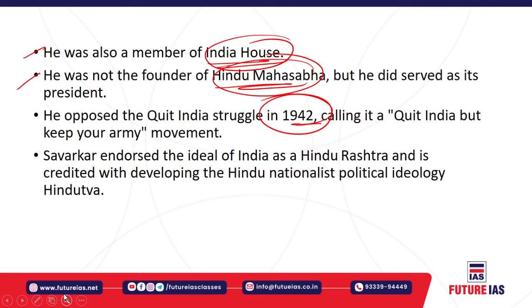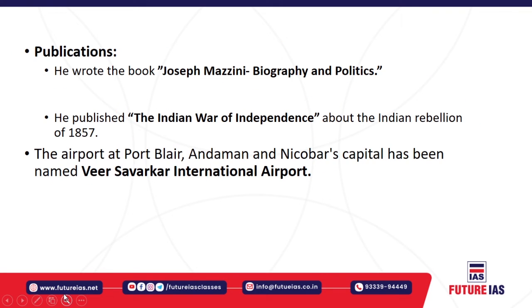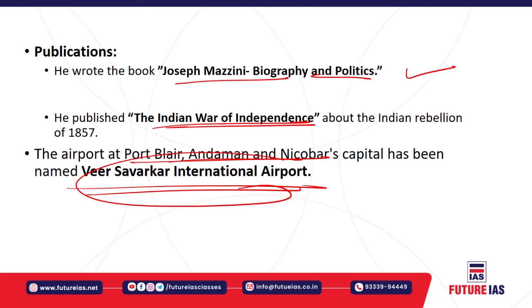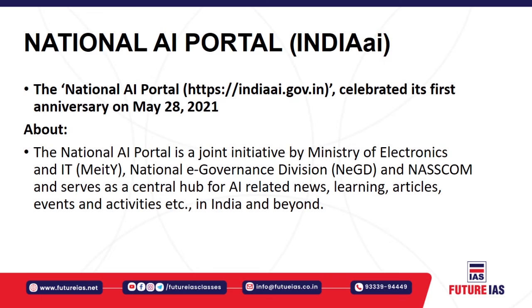Savarkar endorsed the Hindutva ideal for the purpose of a Hindu Rashtra, and he is credited with developing the Hindu nationalist political ideology of Hindutva — that is why the Prime Minister paid tribute on his birth anniversary. He wrote the book on Joseph Mazzini's biography and politics, and also published 'The Indian War of Independence,' related to India's freedom struggle and the revolt of 1857. The airport located in Port Blair in the Andaman and Nicobar Islands is also named after the great Savarkar — Veer Savarkar International Airport.